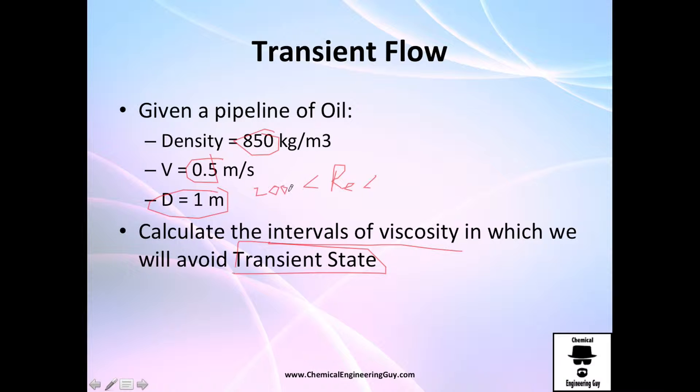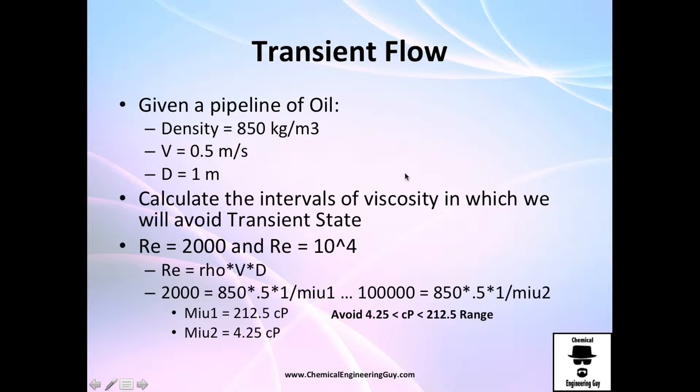We need to be sure we are not having this Reynolds number interval. What I'm going to do is calculate the Reynolds number for 2,000 and calculate the Reynolds number for 10 to the 5th. So first case Re = 2,000, second case Re = 10^5. The density is the same, the velocity is the same, the diameter is the same, the only thing is the viscosity.